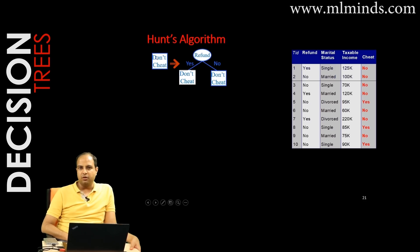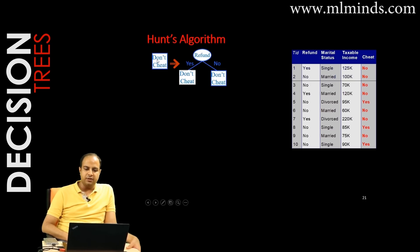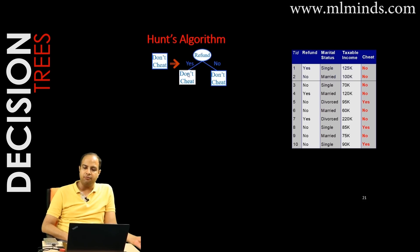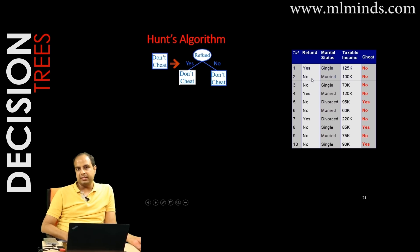That left node is a pure node — all three instances have the same label. In contrast, the trivial root was impure: seven no's and three yes's. When refund=no, there are seven instances on the right side, and among those, three are yes and four are no — a mix, making it an impure node.